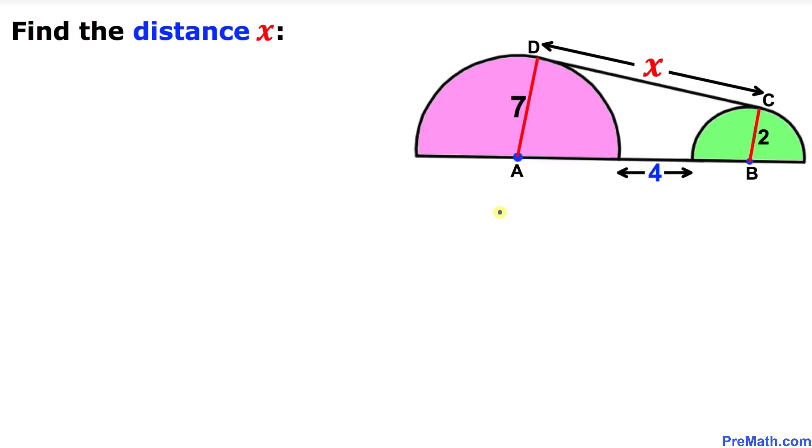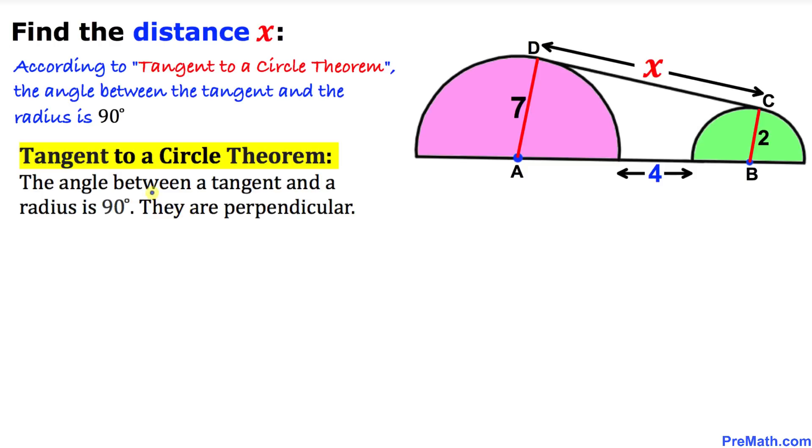So let's go ahead and get started with the solution. Here's our very first step. Let's recall tangent to a circle theorem. The angle between a tangent and a radius is always 90 degrees.